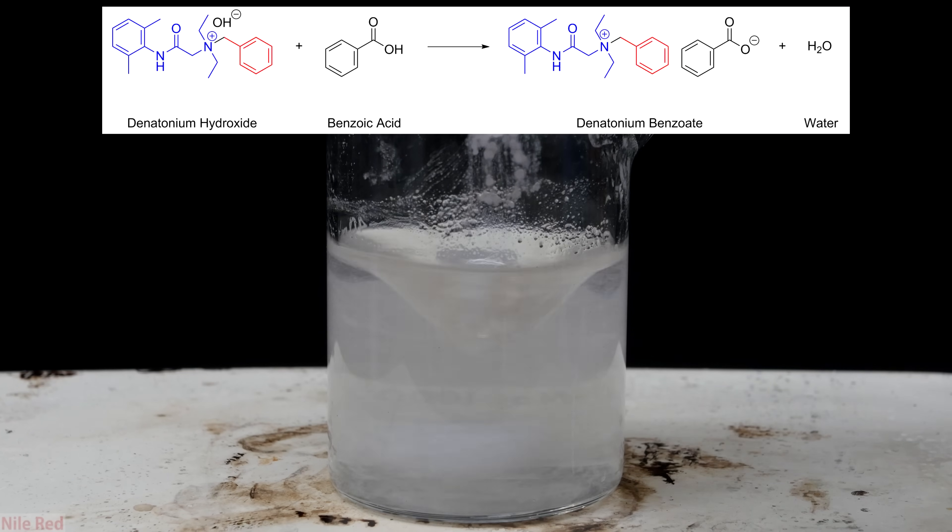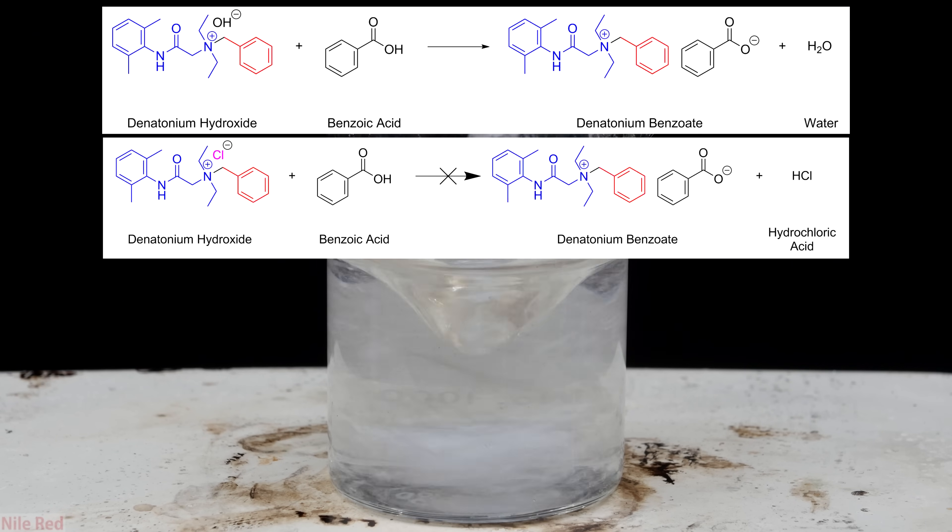The reaction that we're doing here is an acid-base reaction, where the denatonium hydroxide is reacting with the benzoic acid to form denatonium benzoate and water. We needed to use denatonium hydroxide for this reaction because denatonium chloride would have formed hydrochloric acid instead of water. Hydrochloric acid is a stronger acid than benzoic acid, so the reaction wouldn't work because we can't make a stronger acid using a weaker one.